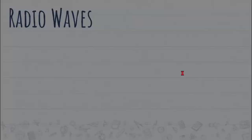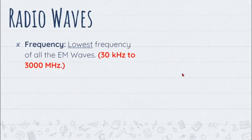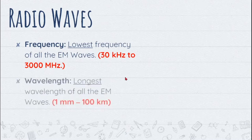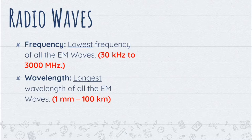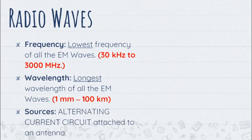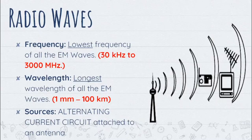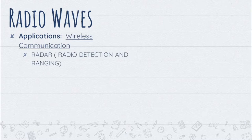Let us have first the radio waves. In terms of frequency, it has the lowest frequency of all the EM waves, ranging from 30 kHz to 3,000 MHz. In terms of wavelength, it has the longest wavelength of all the EM waves, ranging from 1 mm to 100 km. In terms of sources, it is coming from the alternating current circuit attached to an antenna. In terms of application, the major application of radio waves is that it is used for wireless communication. Some examples are radar, or radio detection and ranging, which is used for detection of objects, weather forecasting, military surveillance, and air traffic control.